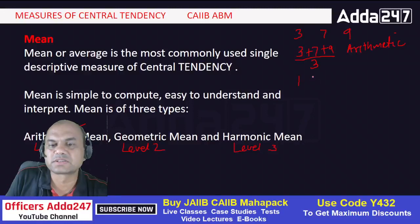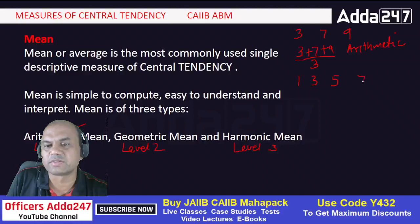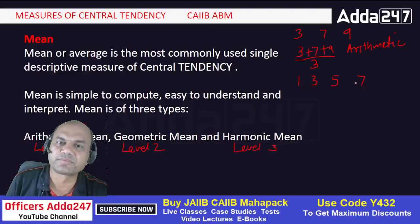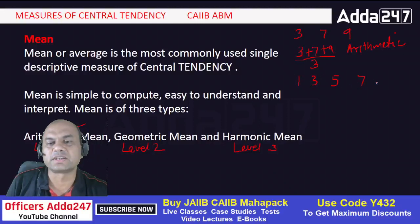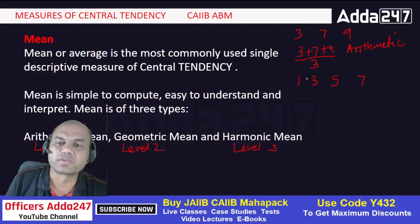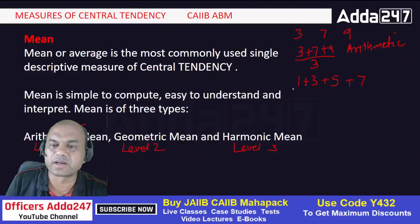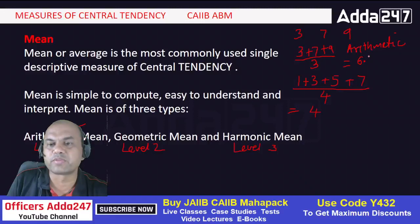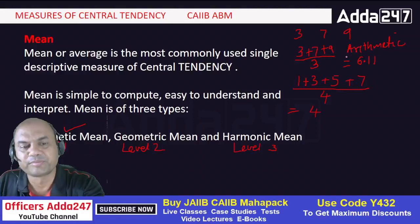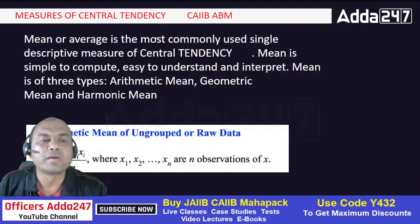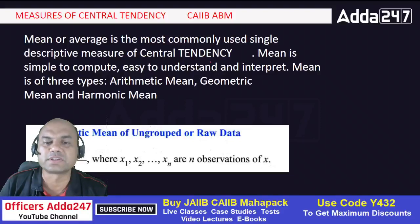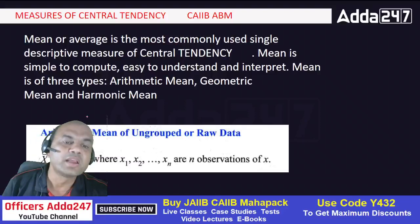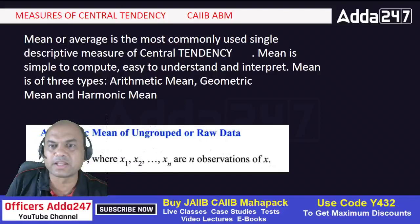Let's try a quick example: what is the mean of 1, 3, 5, 7? You add them all and divide by 4, giving you the central value of 4. For our earlier example of 1, 7, 9 — (1+7+9)/3 = 19/3 ≈ 6.11. That's how arithmetic mean works. Mean is of two types: ungrouped (raw) data and grouped data.